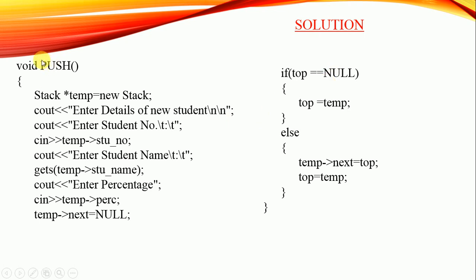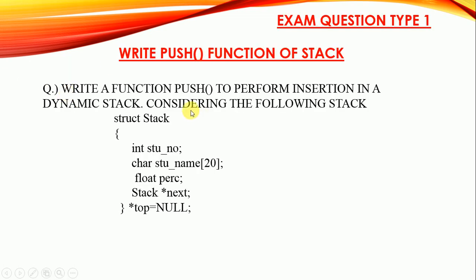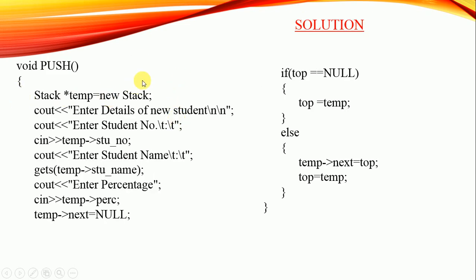The insertion function is named push — void push. First we have to create a new node: stack star temp equals new stack, which creates a new blank node. After that, we take input from the user: enter student number into temp arrow student number, enter student name into temp arrow student name, enter percentage into temp arrow student percentage. Then we set the link to null: temp arrow next equals null. This part creates the new node.